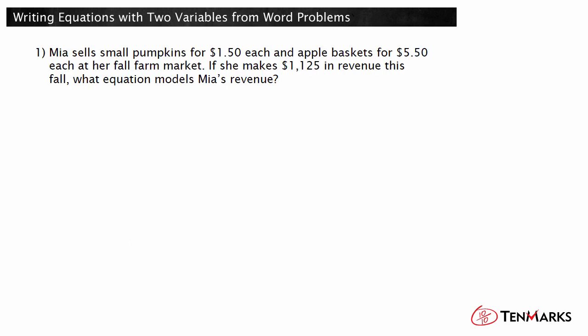Mia sells small pumpkins for $1.50 each and apple baskets for $5.50 each at her fall farm market. If she makes $1,125 in revenue this fall, what equation models Mia's revenue? First, define the variables. The number of pumpkins and the number of apple baskets sold is unknown, so let x represent the number of pumpkins sold, and let y represent the number of apple baskets sold.